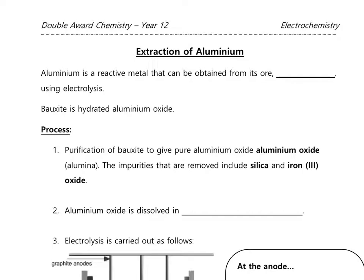We're now going to look at an industrial example of how electrolysis is used to extract a metal from its ore — specifically, the extraction of aluminium on an industrial scale. Aluminium is a reactive metal that has to be obtained by electrolysis because of its position on the reactivity series, which we'll cover in Unit 2.1.